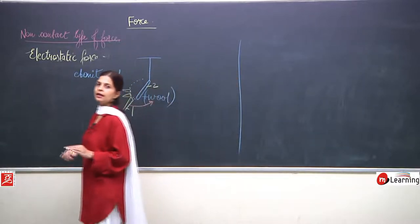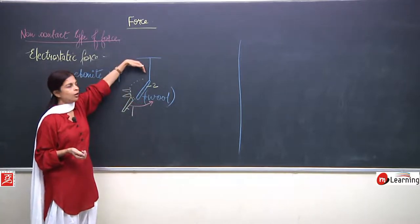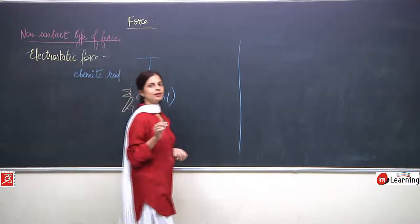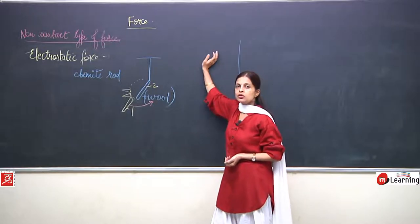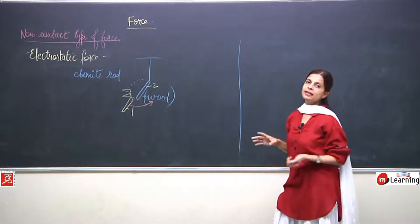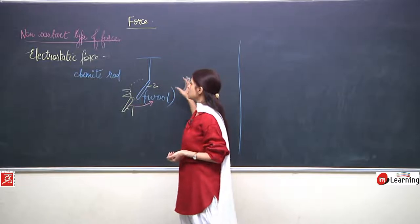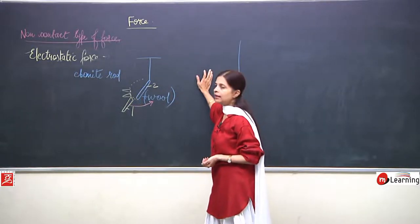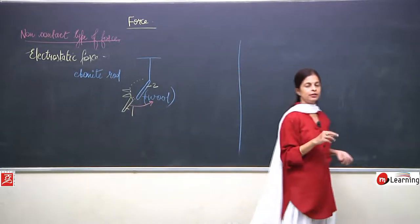Are you clear with this? First time we did this with the straw — one straw was attached and the second was rubbed on the paper, so it developed a charge. Same is the case here: if we rub the ebonite rod with the wool, negative charge is developed, and the uncharged rod gets attracted.